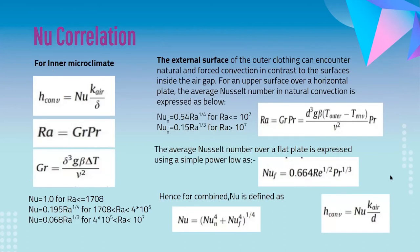For the Nusselt number correlation, the convective heat transfer coefficient for surfaces facing the clothing enclosure is expressed as Nu × k_air / δ. The Rayleigh number determines how heat is transferred through the fluid, and is the product of Grashof and Prandtl numbers. Different Rayleigh number ranges correspond to different Nu correlations — shown on the left for the inner microclimate and on the right for the external surface of the cylinder fabric.